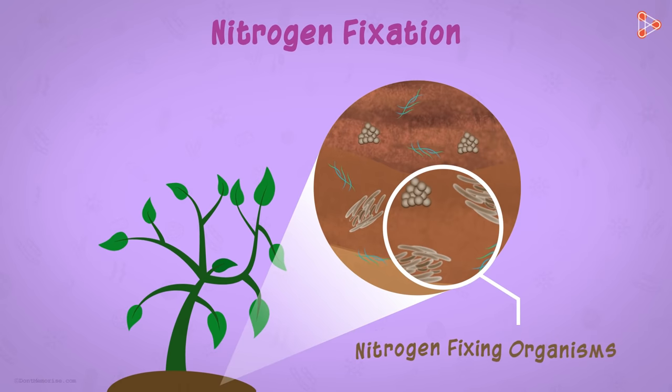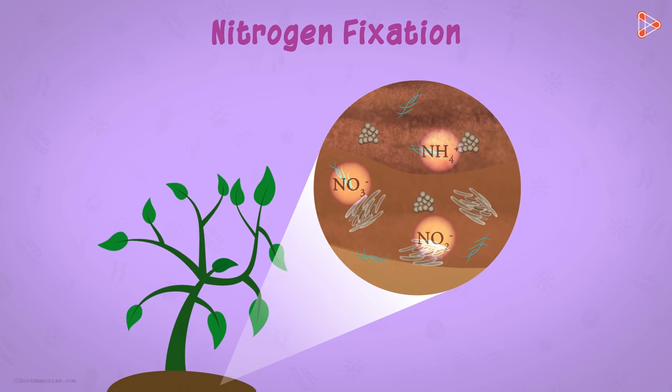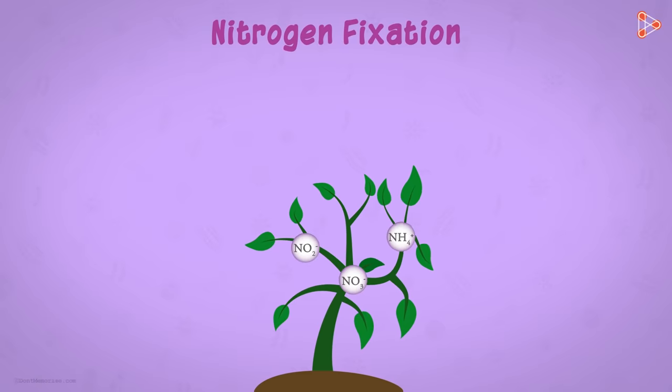These nitrogen fixers present in soil convert the atmospheric nitrogen molecules into compounds like nitrates, nitrites and ammonium. These compounds are then taken up by the roots of the plants. And then the plants use these compounds to synthesize their own proteins.